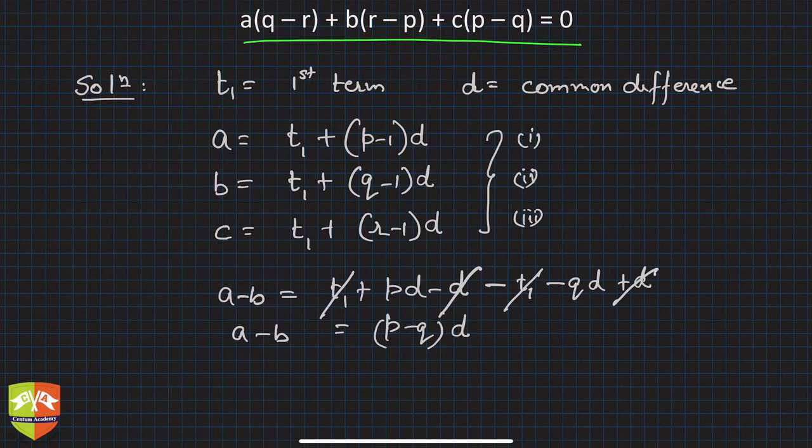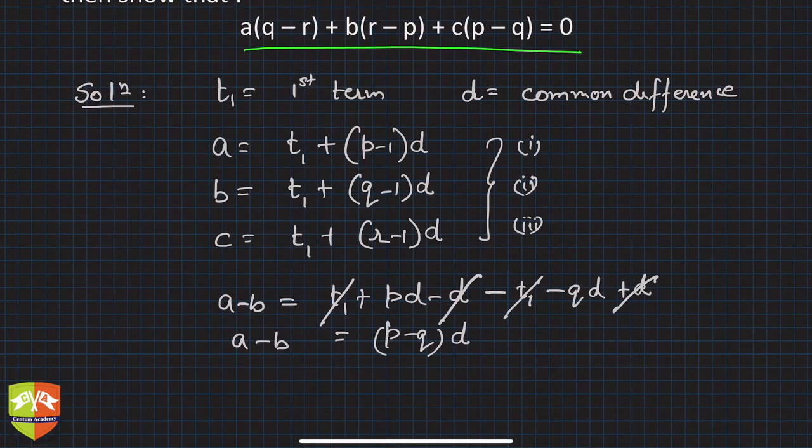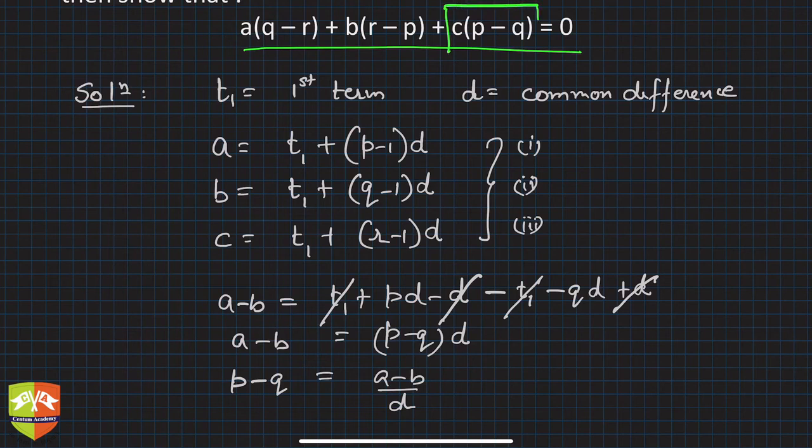So basically, you can find p minus q from here. So p-q = (a-b)/d. Now look at the given expression. You need p minus q for sure, but you need ac also. Never mind, so we can get ac.